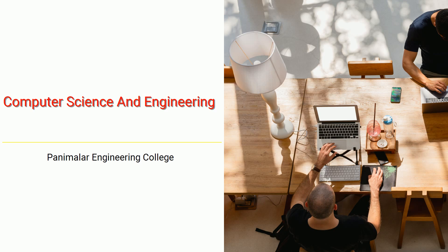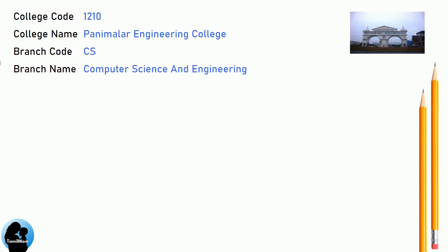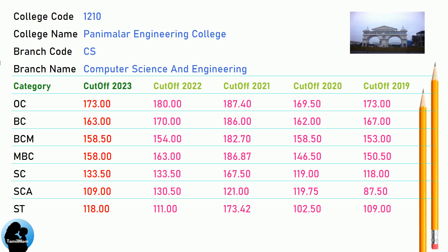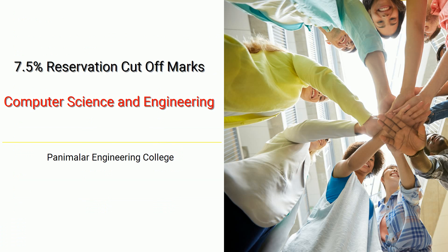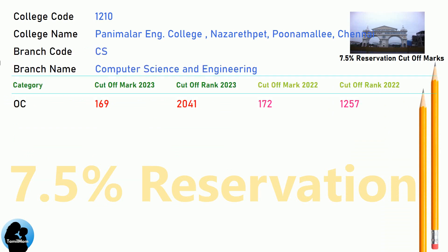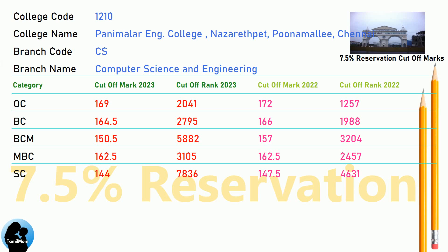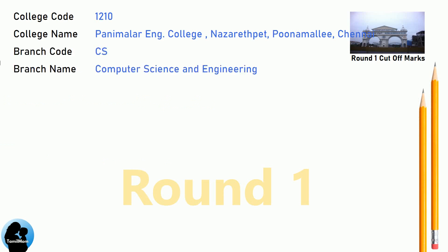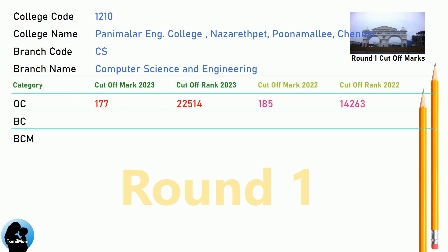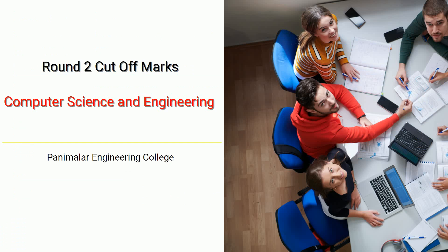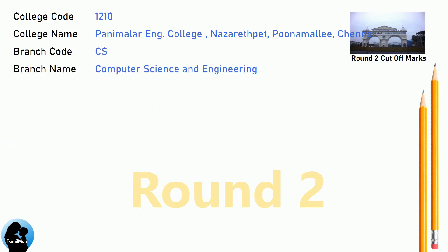DNA Cut-off for Panimalar Engineering College in Computer Science and Engineering. DNA 7.5 Reservation Cut-off for Panimalar Engineering College in Computer Science and Engineering. DNA Round 1 Cut-off for Panimalar Engineering College in Computer Science and Engineering. DNA Round 2 Cut-off for Panimalar Engineering College in Computer Science and Engineering.